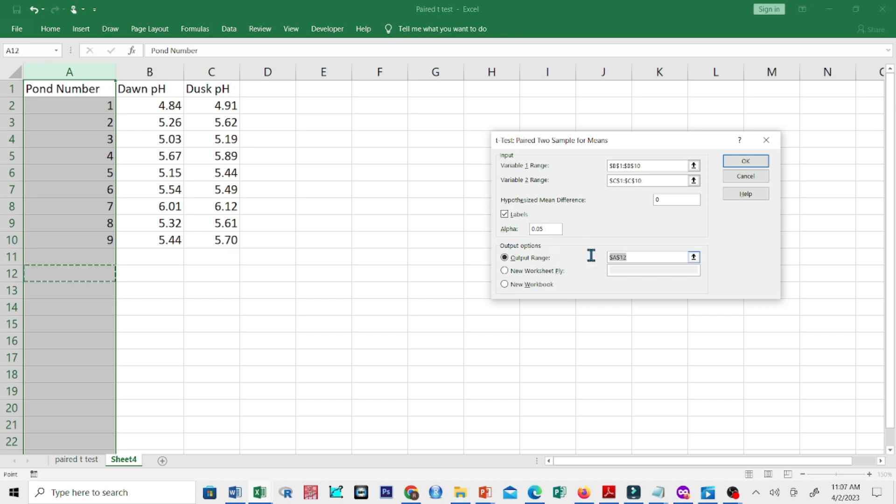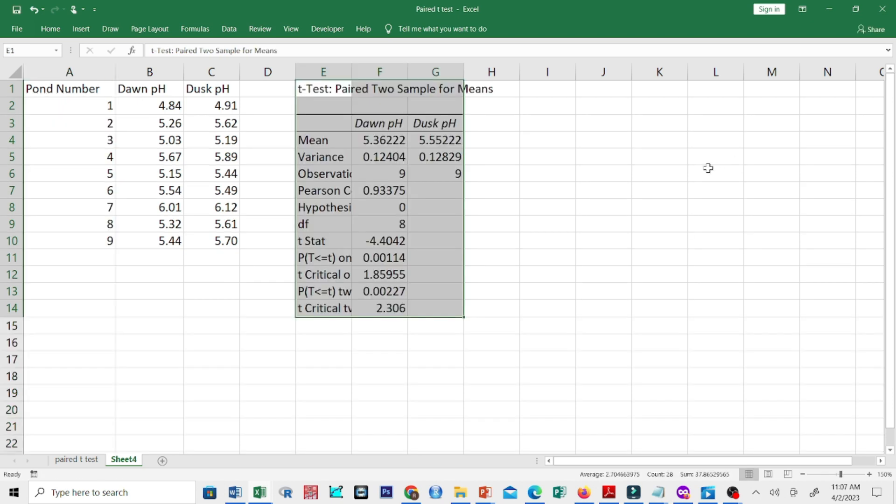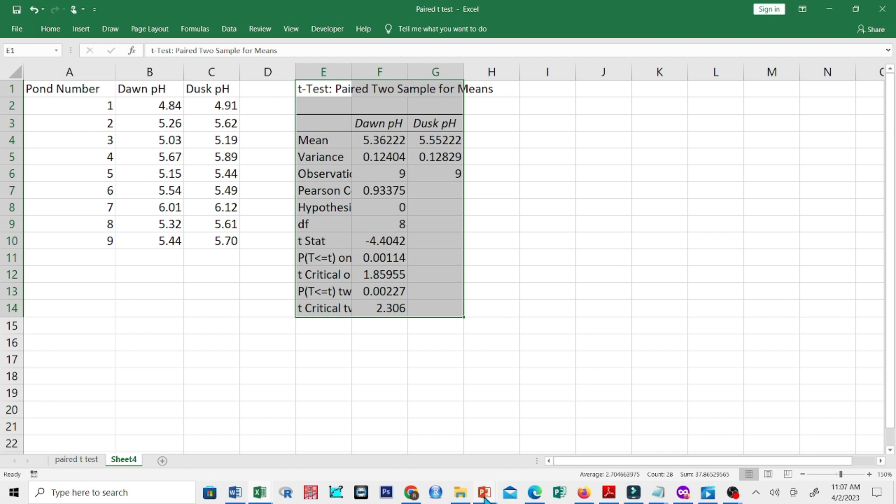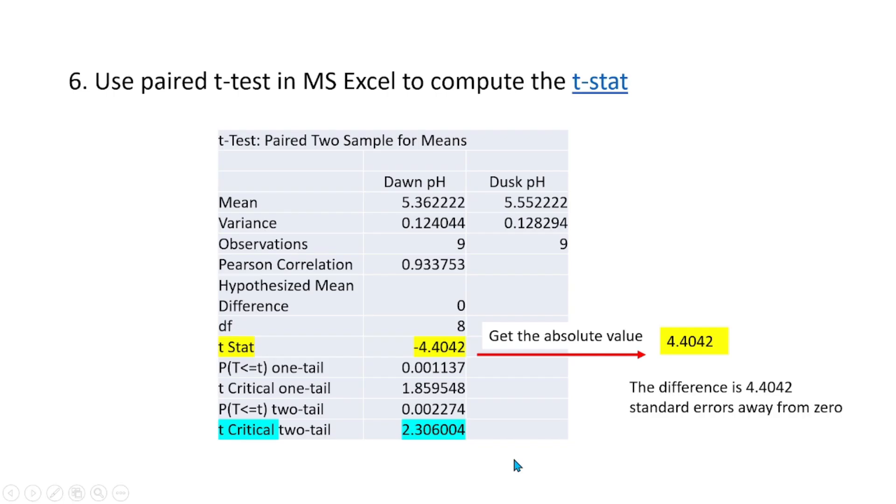Let us define the output range, this time I want the output to be placed near our table. Then, let us click OK. So this is now the output, we have plenty of data here. Let us first check the mean pH at dawn and dusk. Here we can see that the mean pH at dawn and dusk were 5.36 and 5.55, respectively.